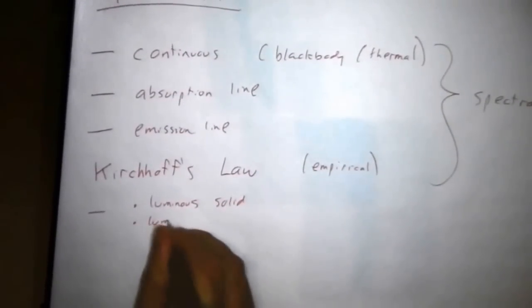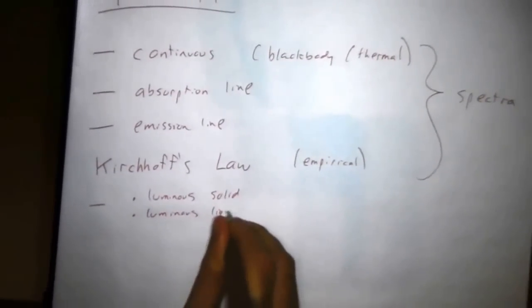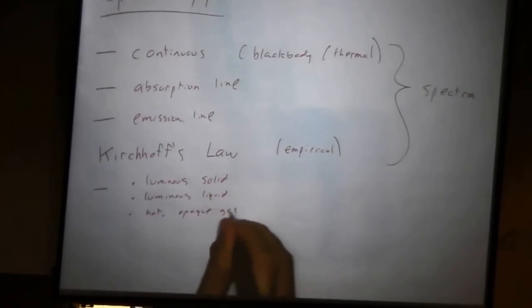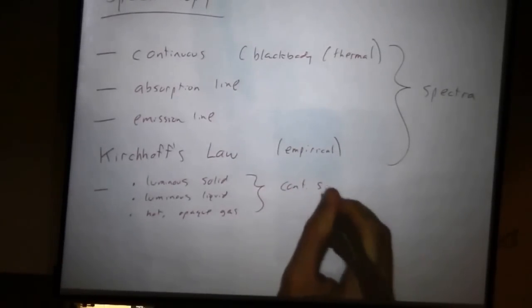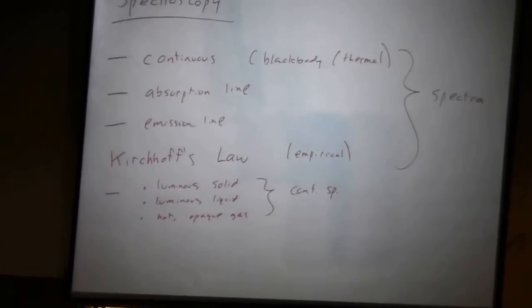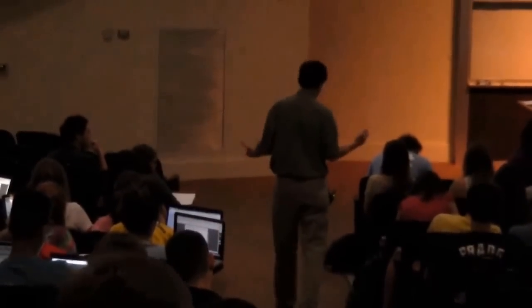Here, I'll just do kind of an outline for them. If you have a luminous solid, or a luminous liquid, or a hot opaque gas, those are the conditions that will give you a continuous spectrum. Let's think of some examples. What's an example of a luminous solid? Exactly. You saw it just last class. The filament in the light bulb is a piece of metal. It's solid. It glows.